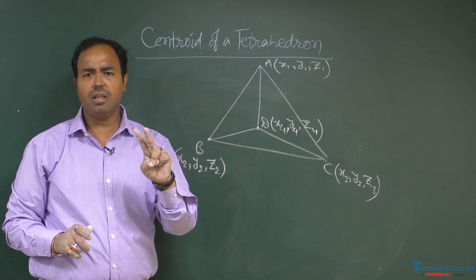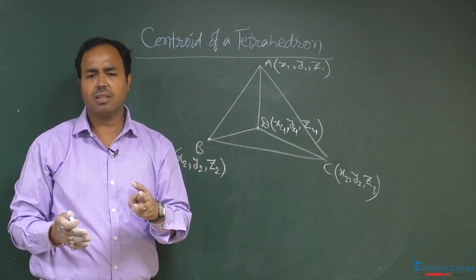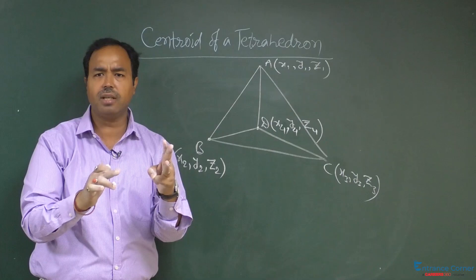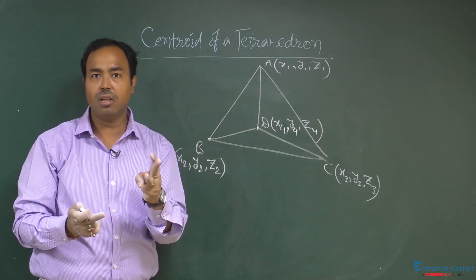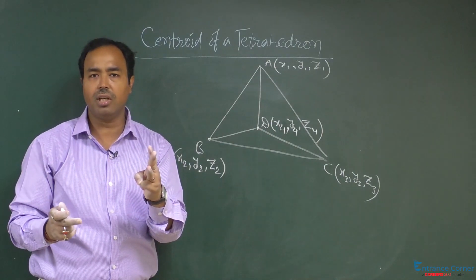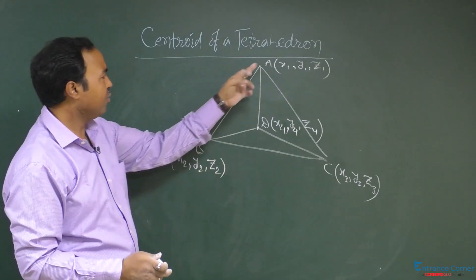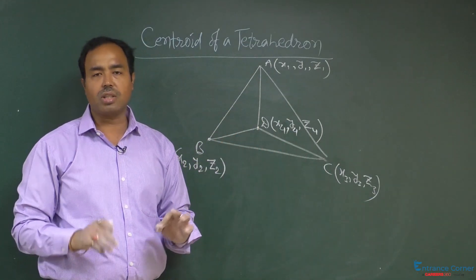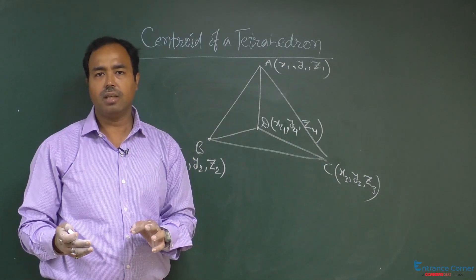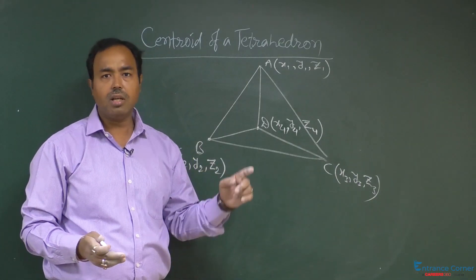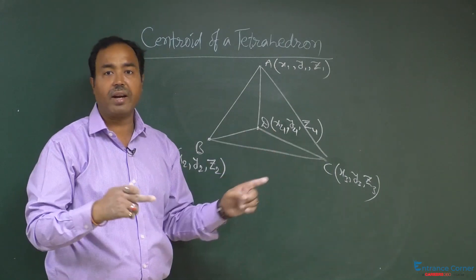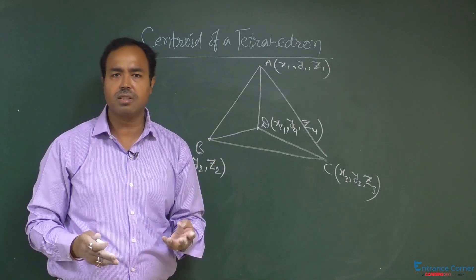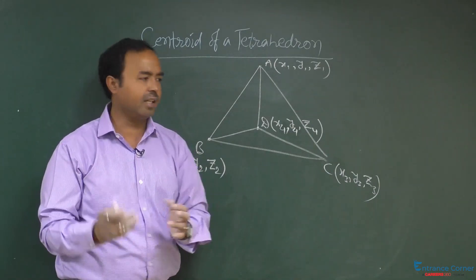Student, you can generalize it. You have three vertices, so (x1 + x2 + x3)/3, that is the arithmetic mean of the three numbers x1, x2, x3. Similarly, here we have four vertices A, B, C, D. So the centroid of the tetrahedron is (x1 + x2 + x3 + x4) divided by 4. That is again the arithmetic mean of the four numbers. So you can generalize it.